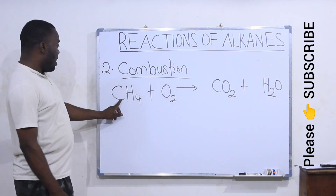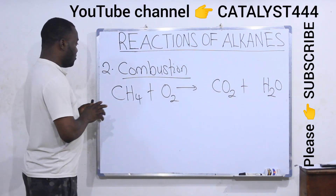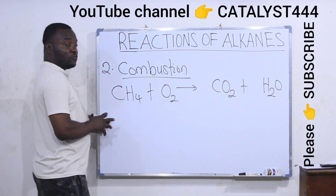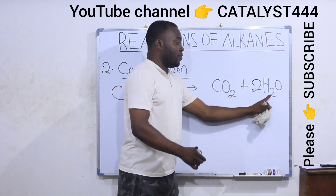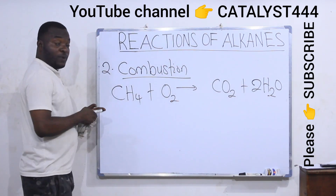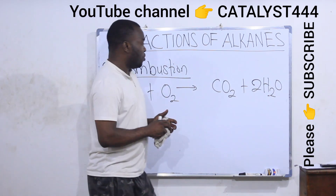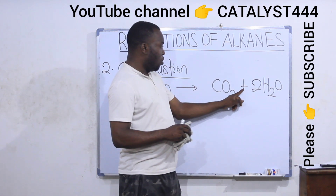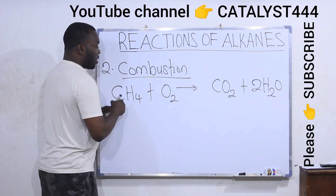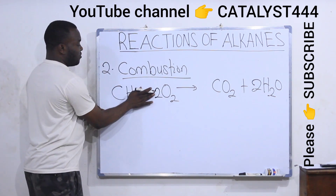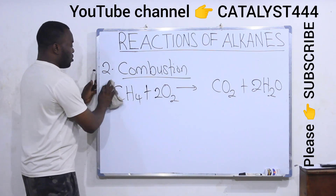On the left-hand side I have only one carbon atom; on the right-hand side I have one carbon atom — carbon is balanced. On the left I have four hydrogen atoms; on the right I have two, so I'll put two here, so that two times two is four — hydrogen is balanced. For oxygen: on the left I have two atoms of oxygen; on the right I have two plus another two, total four. So I can put two here to balance the equation. The equation is balanced.